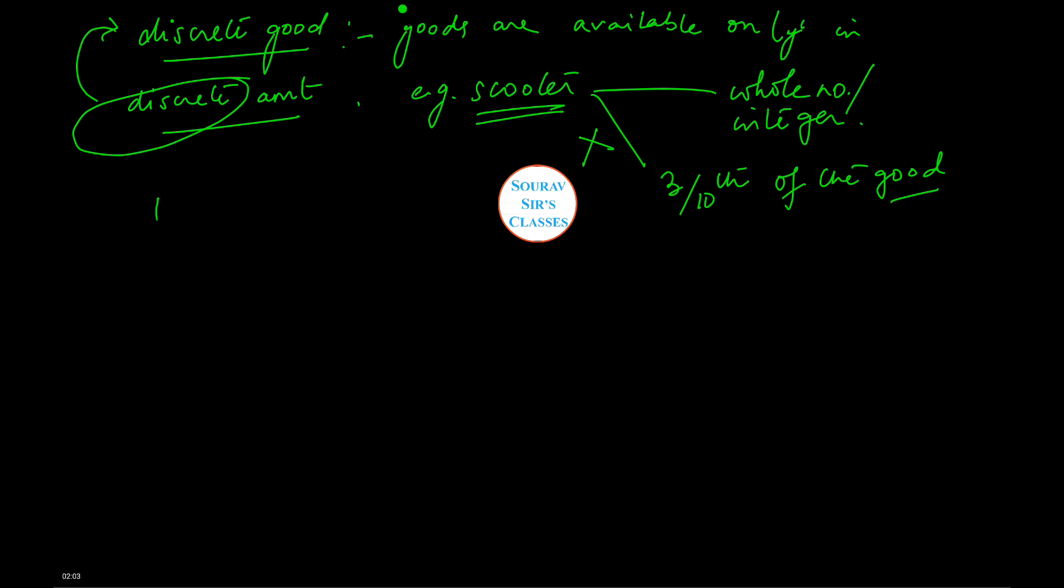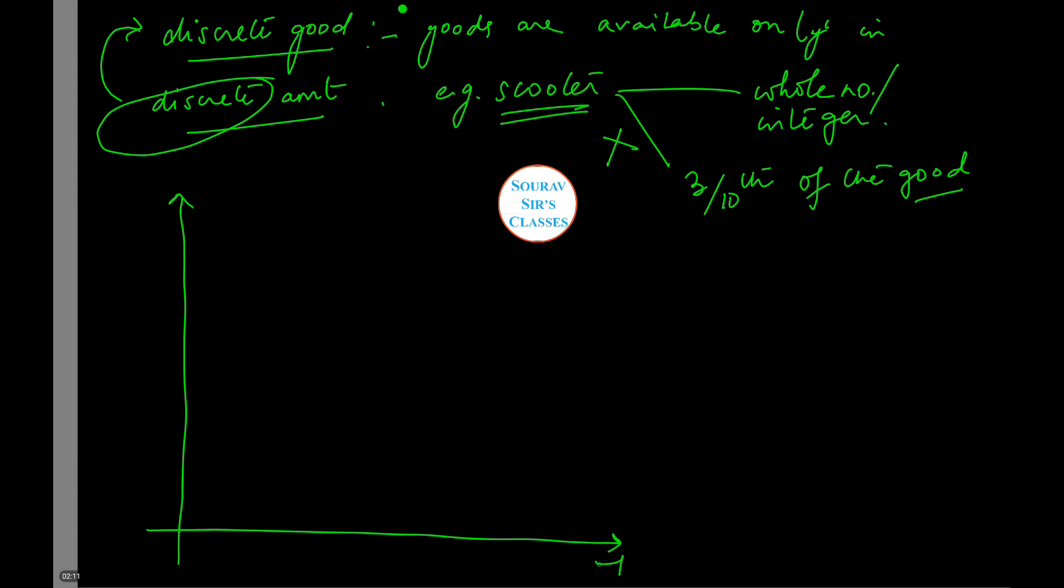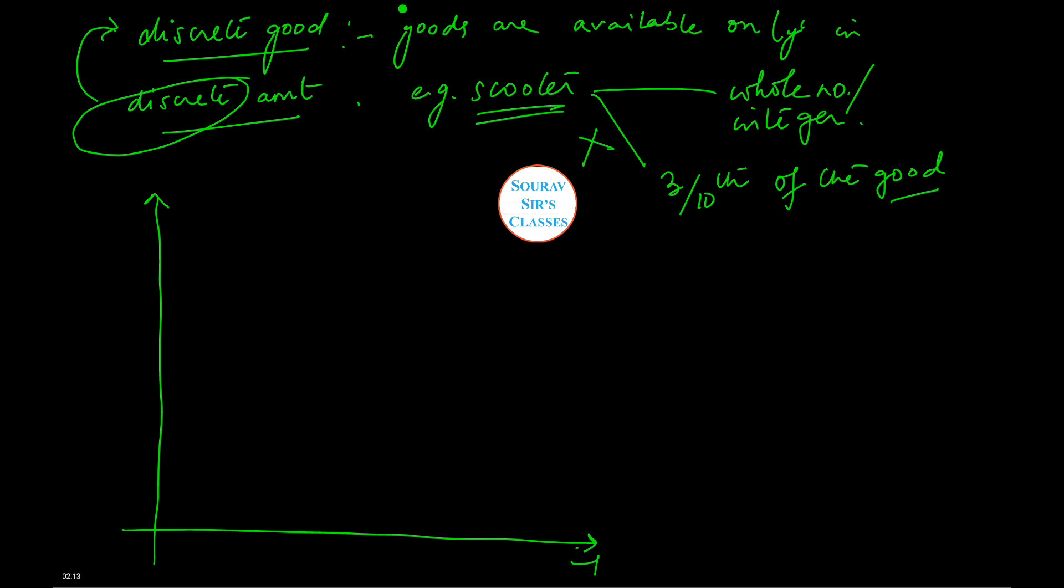So let us draw the indifference curve for these kinds of goods. So let my Good 1 be the discrete good, and Good 2 is normal. It is not that there is any special form for this particular good. Now let us draw the ICs.